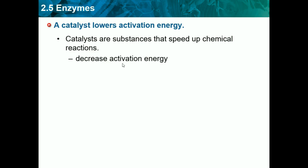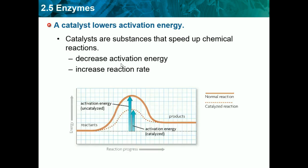You may be wondering how, and the thing catalysts do is they decrease activation energy, which we learned in our last video was the energy needed to start a chemical reaction. In decreasing the activation energy, it increases the reaction rate. The red line is the normal reaction, and the blue arrow is the activation energy, which is higher than the dotted line — the catalyzed reaction. The catalyzed reaction has a lower activation energy, making the process quicker — it needs less energy to get to the top.